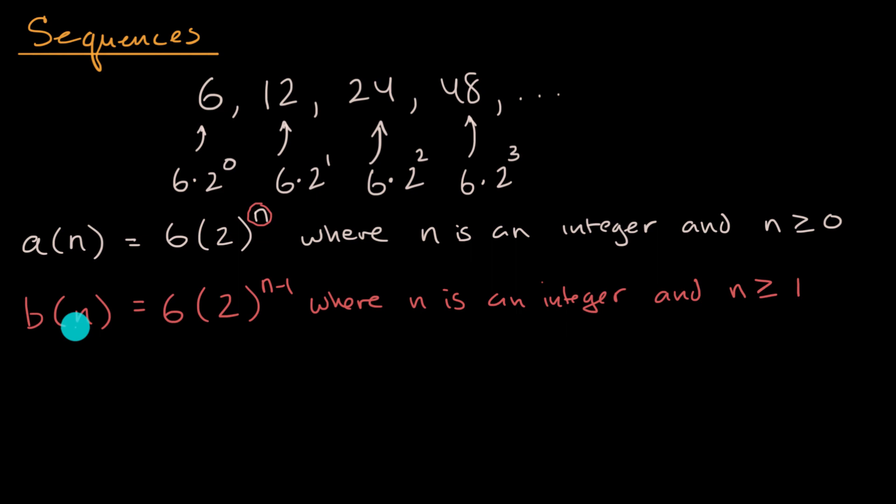Notice now when we put n equals one in here, and we could maybe call this the first term, we want to generate a six. So what happens? One minus one, we get that zeroth power that we want right over there. And so six times two to the zero is indeed six. Then when n is equal to two, it's six times two to the two minus one, which is just two to the first power. So it's just become six times two, which is equal to 12. So notice these are different function definitions with different domains, but they're generating the exact same sequence.